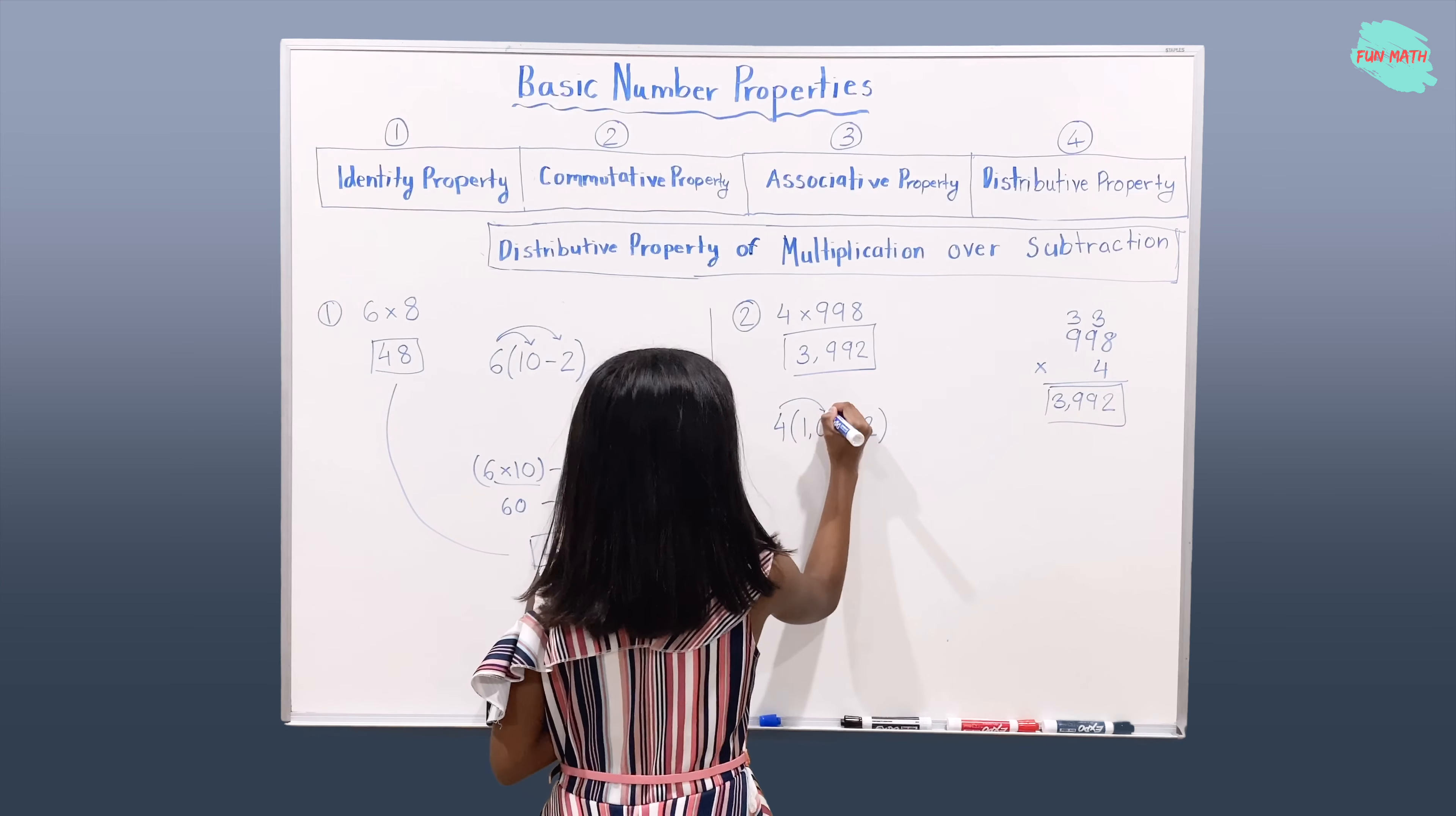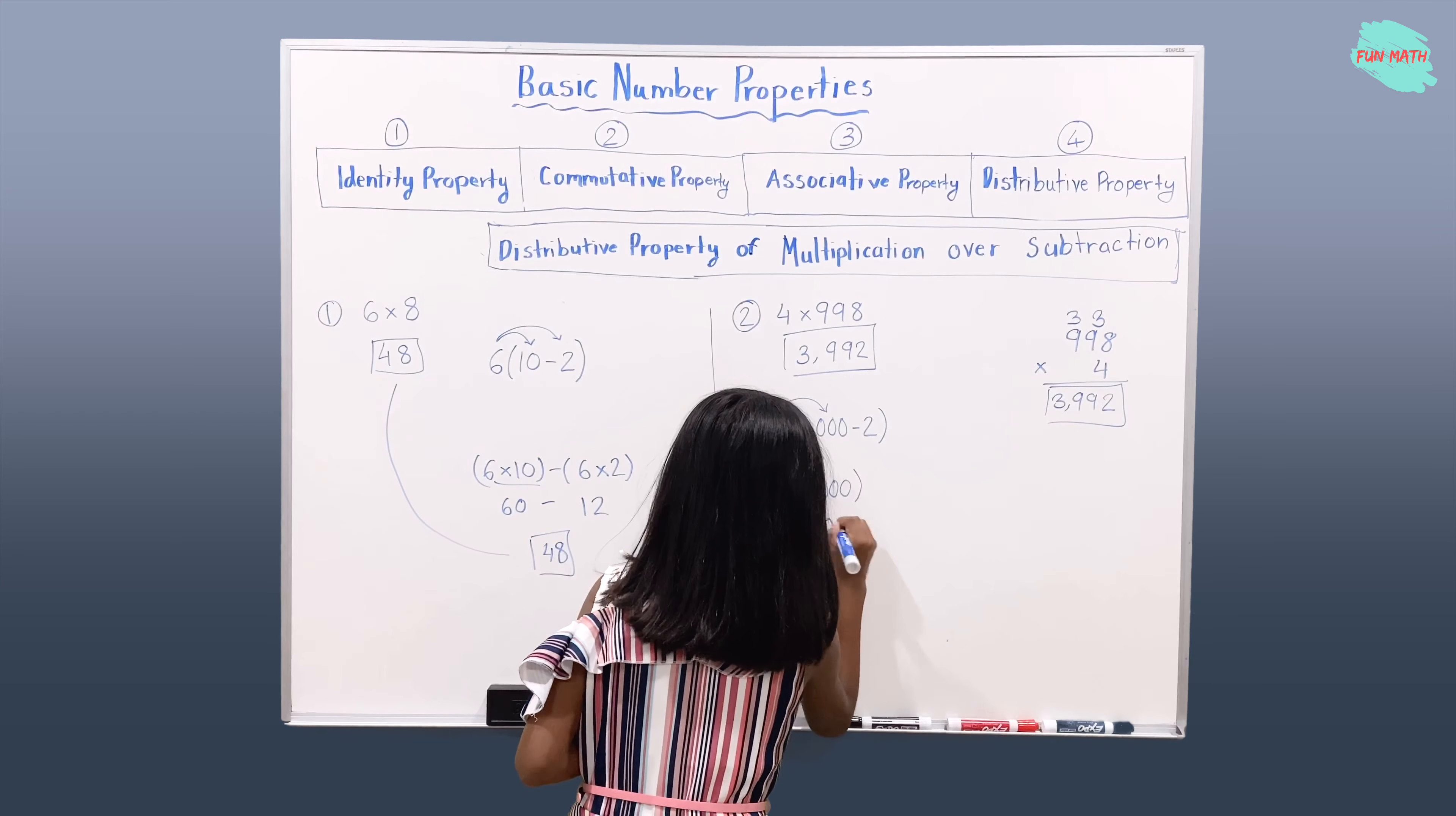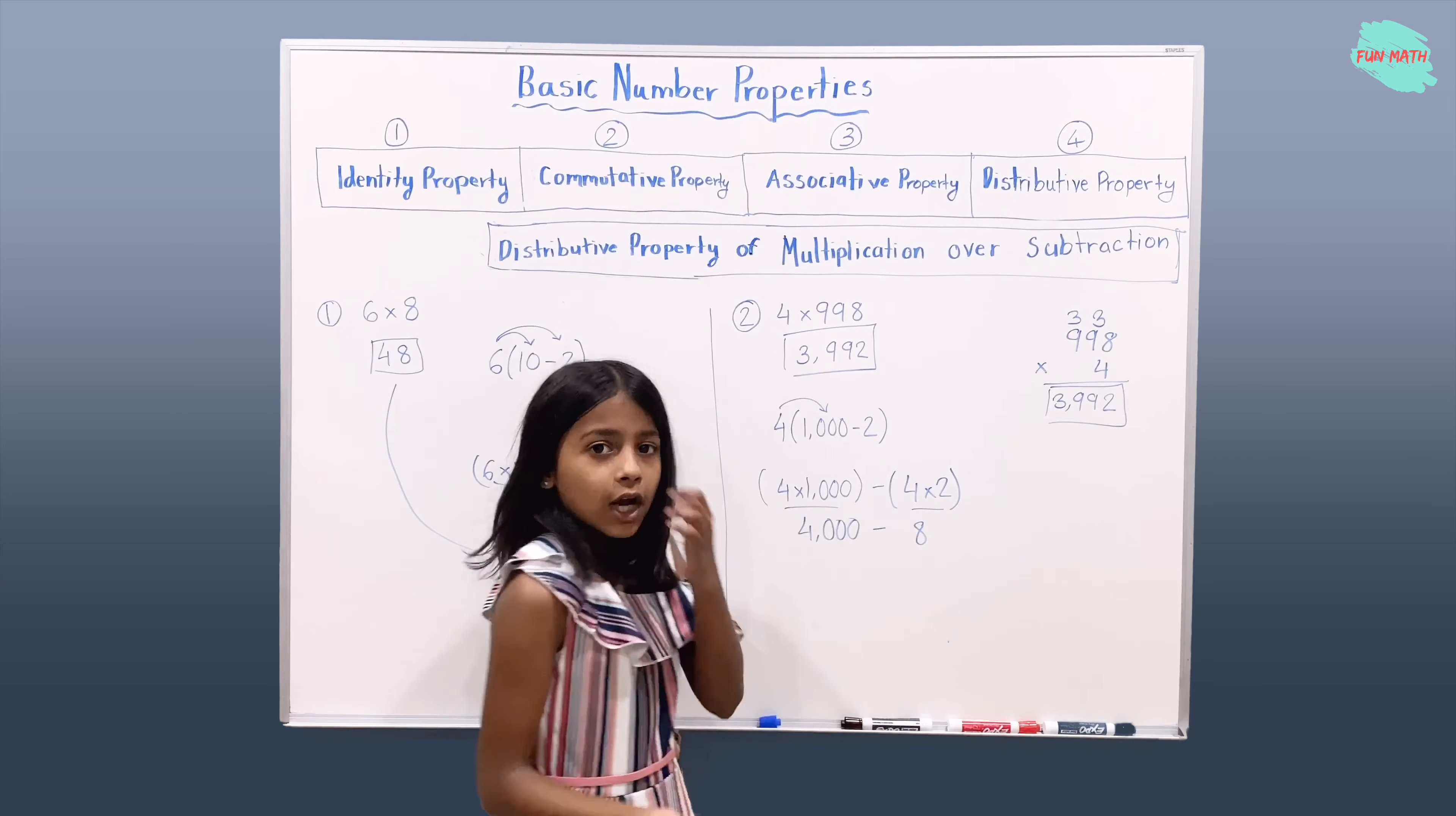Okay, we're going to multiply 4 by 1000. If you multiply 4 by 1000, you should get 4000. And then subtract 4 times 2, which gives you 8.